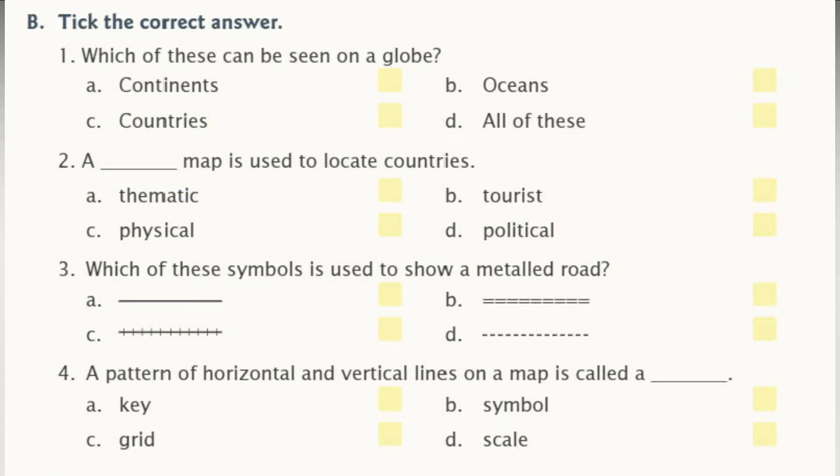Which of these can be seen on a globe? Options are continents, oceans, countries, all of these. The answer is all of these.